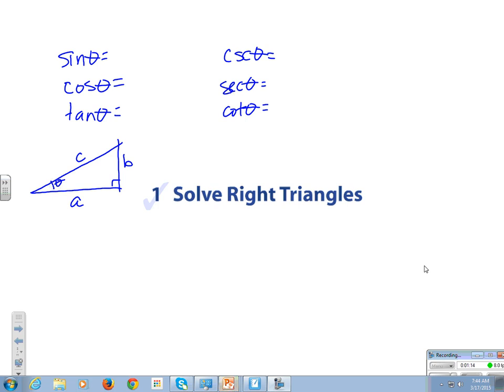So the sine of theta is opposite over hypotenuse, which is B over C. Cosine of theta is adjacent over hypotenuse. Tangent of theta is opposite over adjacent.